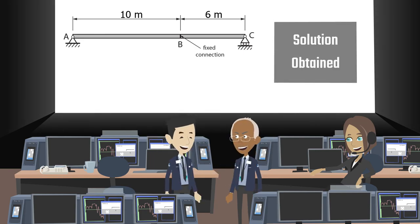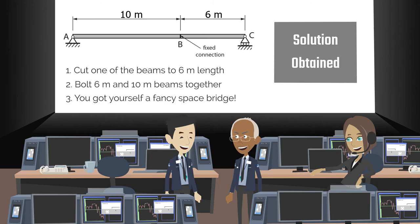Mission Control comes back to you with their solution. They tell you to simply cut one of the beams to a 6-meter length and bolt it to the 10-meter long beam, creating a 16-meter long beam that can span the canyon.